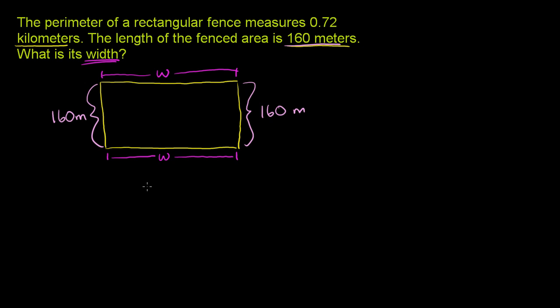Now, what is the perimeter of the fence? The perimeter is the sum of this length plus this length plus that length plus that length. So the perimeter is going to be equal to w, the width, plus 160 meters, plus w, plus 160 meters.